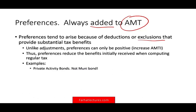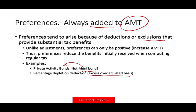Examples of preferences include private activity bonds — when a municipality sponsors a company to issue bonds, the person who buys them is treated as a municipal bond for tax purposes. But since it's issued by a company and not directly by the municipality, that preference is taken away. Also, they take away the percentage depletion deduction in excess of the adjusted basis — for regular tax you can take more deduction beyond adjusted basis, but for AMT they take away that excess. The third is pre-1987 accelerated depreciation, which is no longer relevant because those assets are fully depreciated.